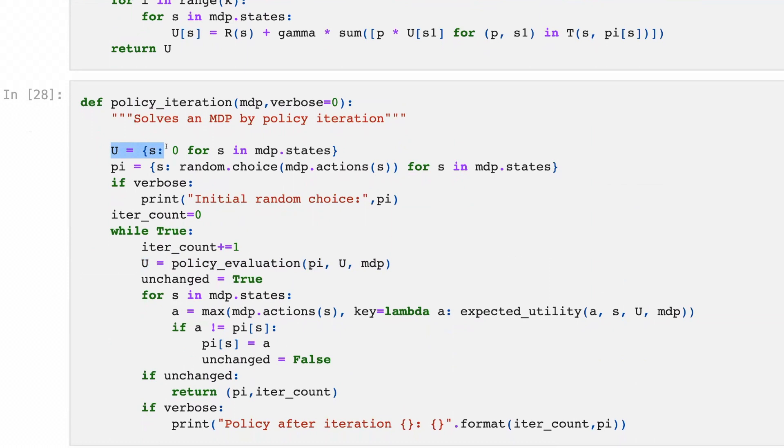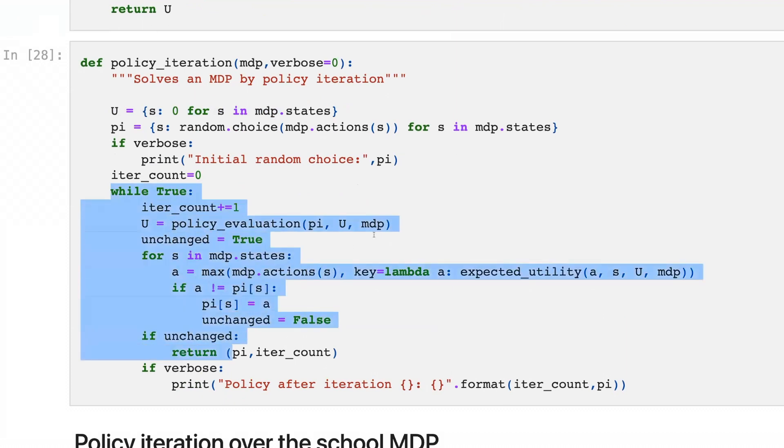So we initialize the state values with zeros just to begin with something. Then P is policy. We start with a random choice and then try to improve it. This loop is familiar to you.